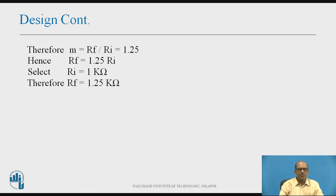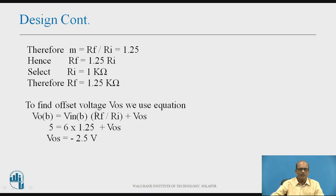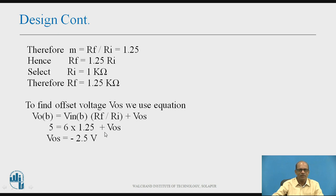Therefore, M = Rf/Ri = 1.25, so Rf = 1.25·Ri. Selecting Ri = 1 kΩ, therefore Rf = 1.25 kΩ. To find the offset voltage V-os, we use the equation V-ob = V-in-b · Rf/Ri + V-os. Substituting: V-ob = 5 V, V-in-b = 6 V, Rf/Ri = 1.25. Solving this equation, we get V-os = −2.5 V.